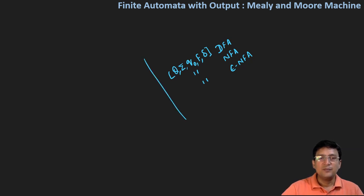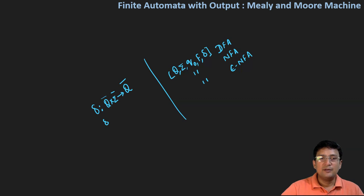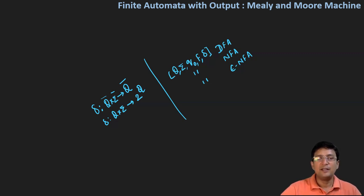If we differentiate between the three, in the DFA the transition function delta is defined as Q cross sigma maps to exactly one state in Q. It means if I take all the states and take its cross product with the input alphabet, this actually means a transition, and that leads us to one of the states in Q. In the NFA, Q cross sigma maps to one of the states in two raised to the power Q, and multiple transitions with the same symbol are also allowed in the NFA, but not in the DFA. In the DFA, by taking one symbol, I will move to one state only.